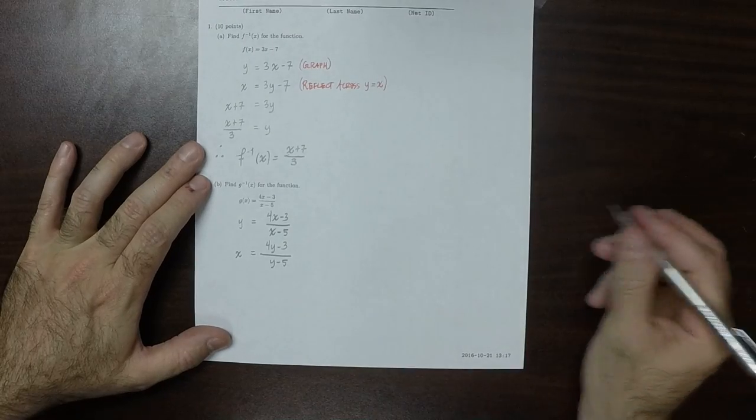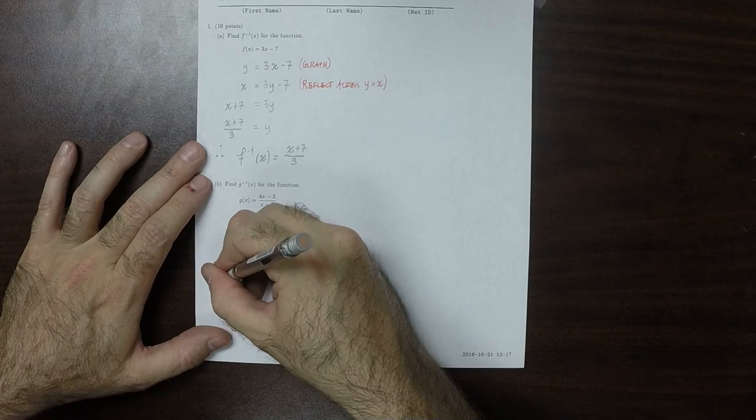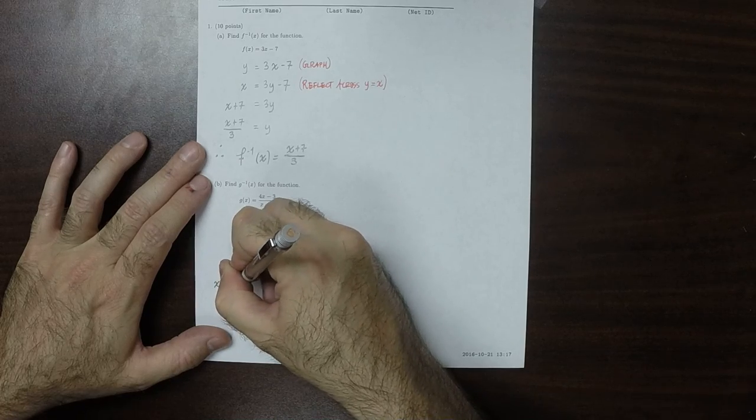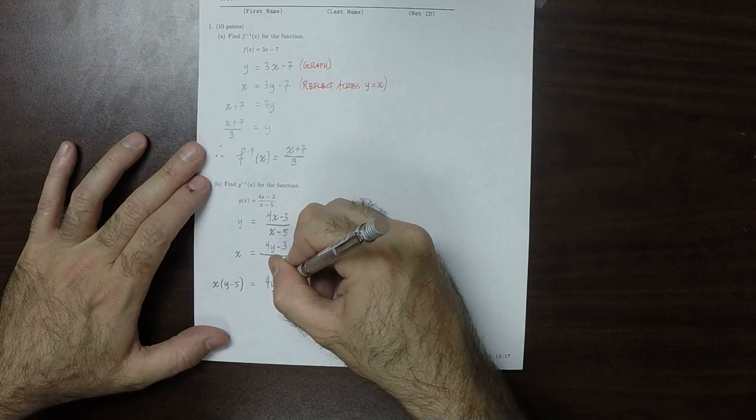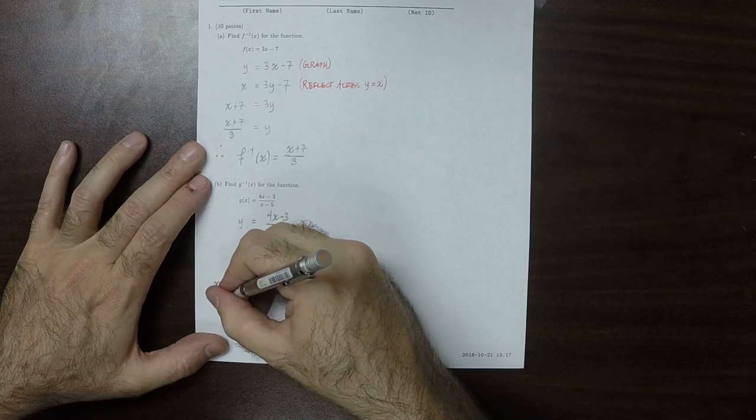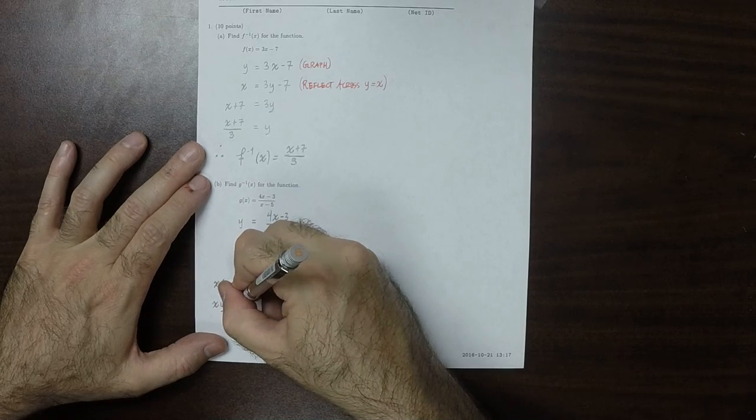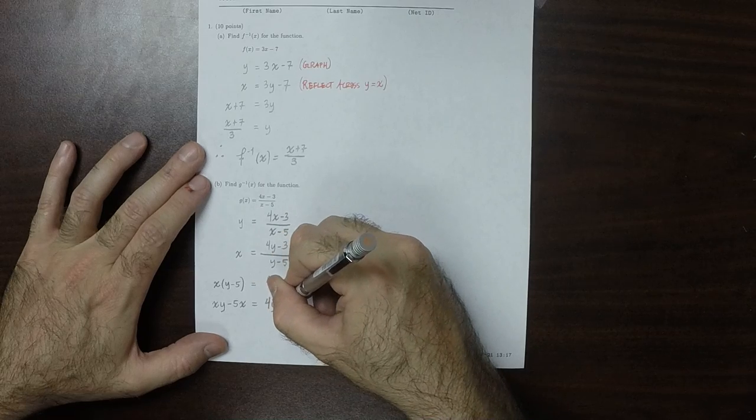And now we want to solve for y. So I'll multiply both sides by y minus 5. So x multiplied by y minus 5 is 4y minus 3. So xy minus 5 is 4y minus 3.